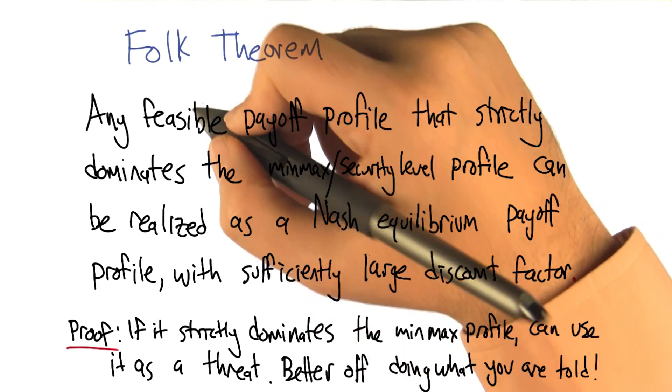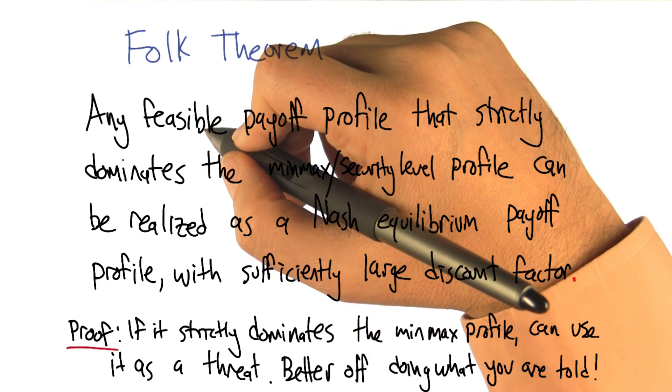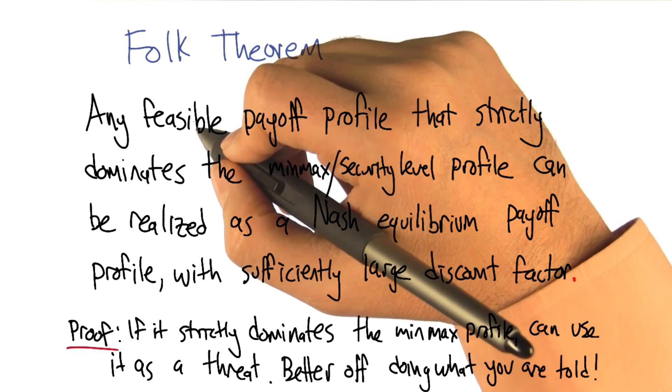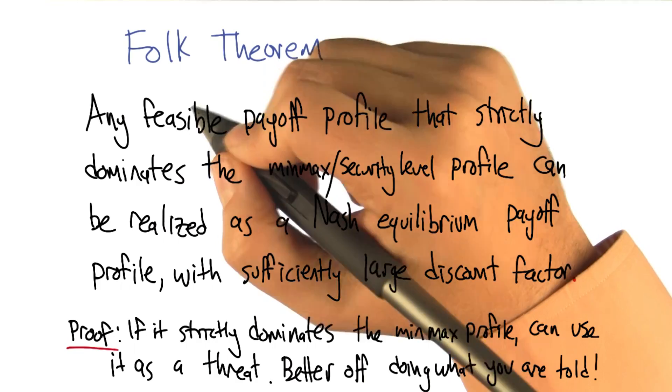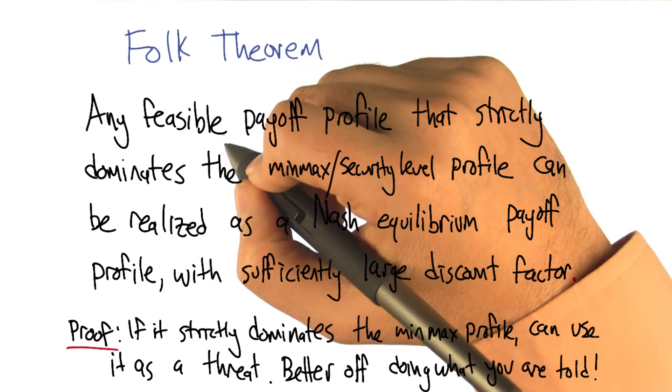And the reason to make that a Nash equilibrium, what we need to do is make it so that it's a best response. And the way that we're going to make it a best response is we're going to say, do what you're told.